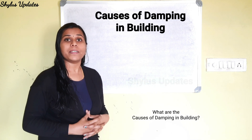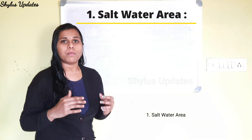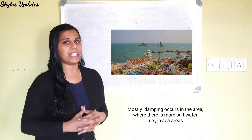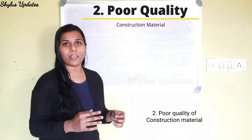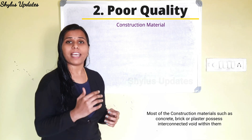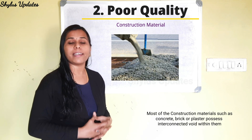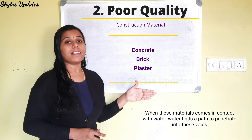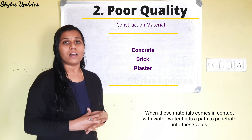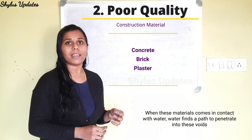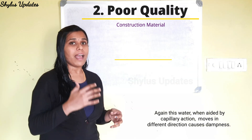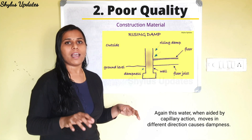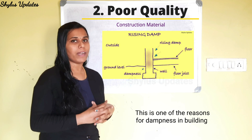What are the causes of dampness in buildings? First, salt water areas — dampness occurs mostly in areas where there is more salt water, that is in sea areas. Next is poor quality of construction materials. Most construction materials such as concrete, brick, or plaster possess interconnected voids within them. When these materials come in contact with water, the water finds a path to penetrate into these voids. This water, when aided by capillary action, moves in different directions and causes dampness.